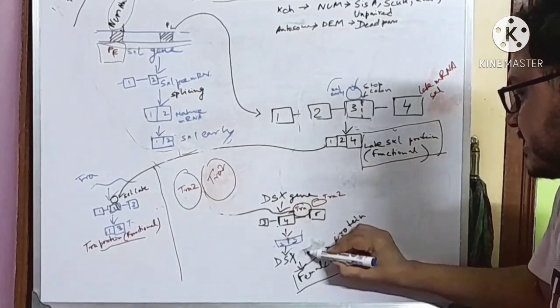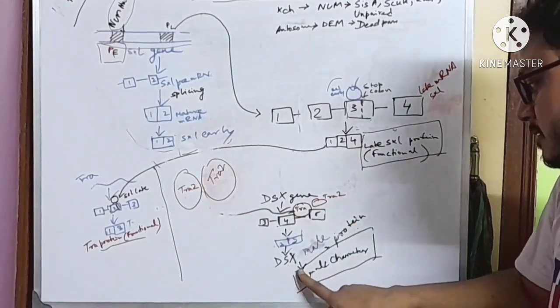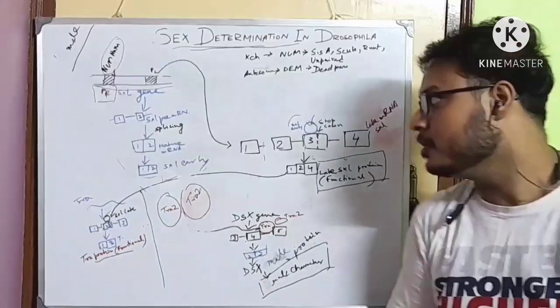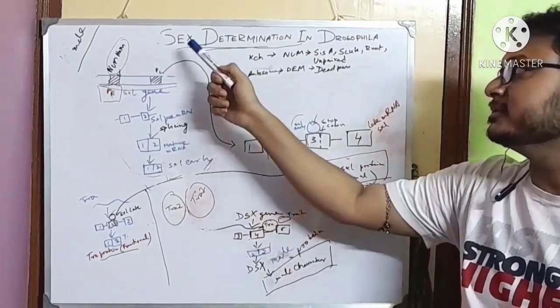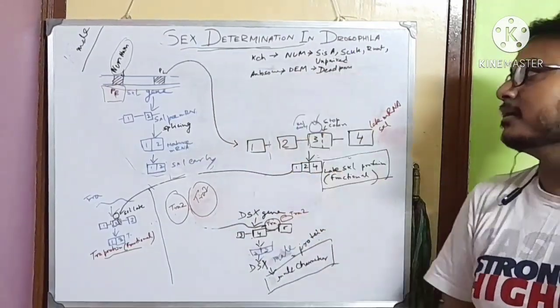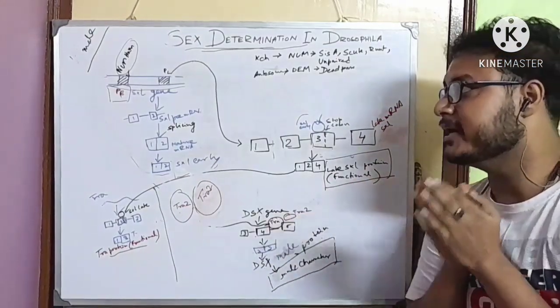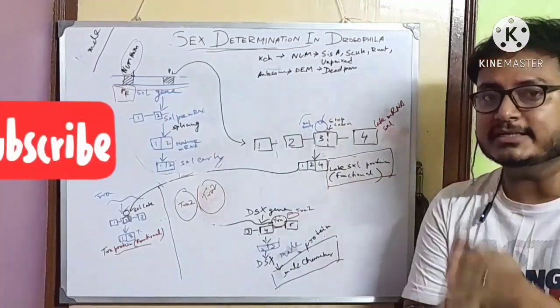DSX male protein produces male characteristics. So this is the entire process. That is how the sex determination in Drosophila is done, and the entire process is dependent upon alternative splicing.